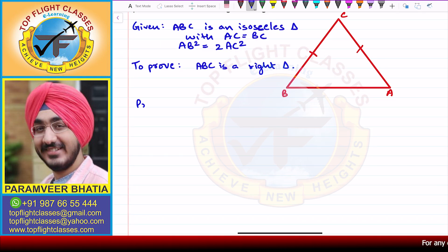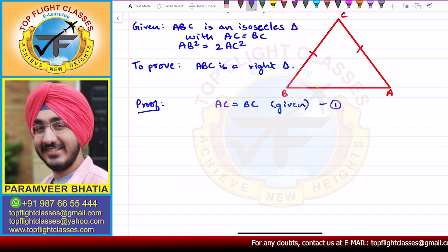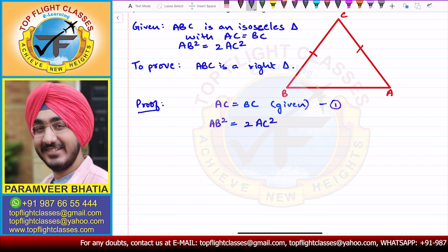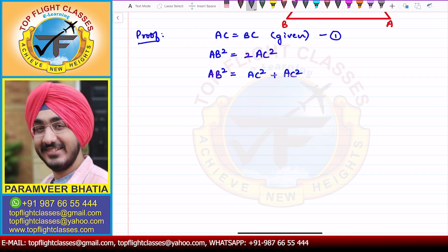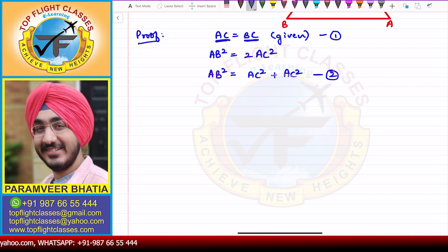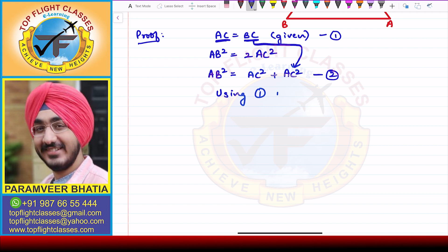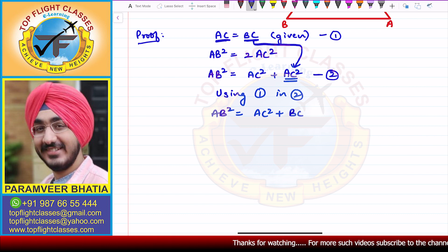AC is equal to BC — this is given to us. Let this be my first equation. If I use this in the second equation — substituting 1 into 2 — I will get that AB square is equal to AC square plus BC square, replacing one AC square with BC square.